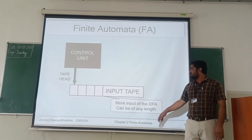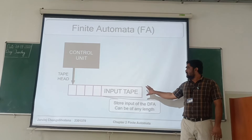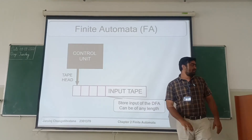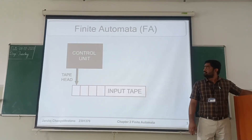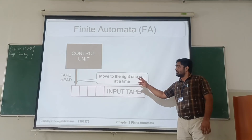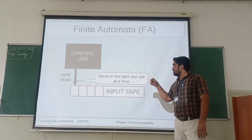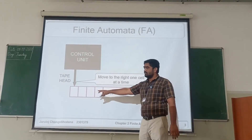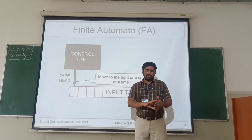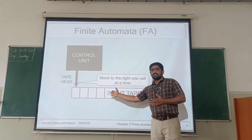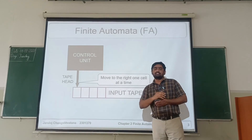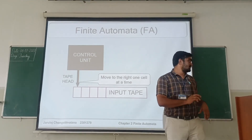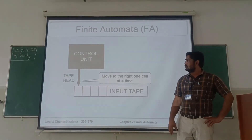The input data will be shown and received by the control unit. For the transition that happens — the input will be received and moved to the right — once the first input is received by the control unit, it will process it, and once the first input gets accepted, it will work on the second input.